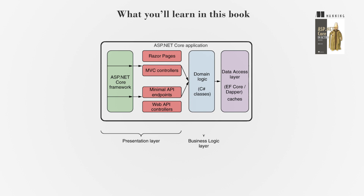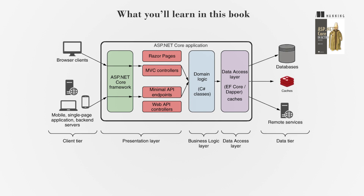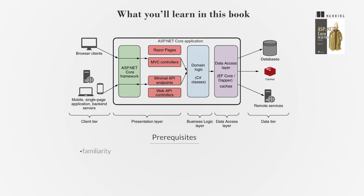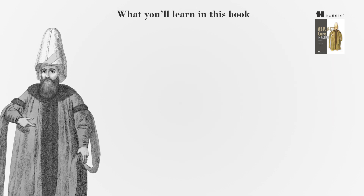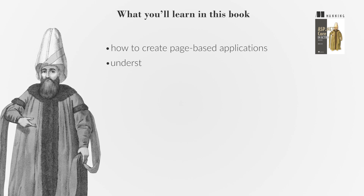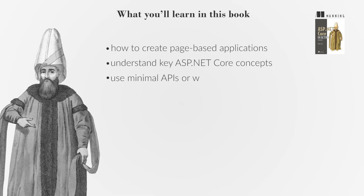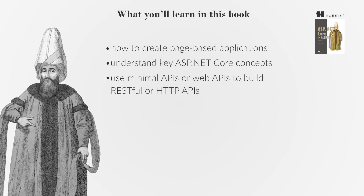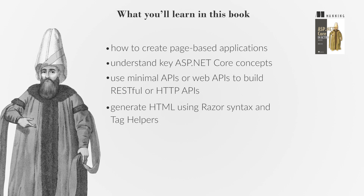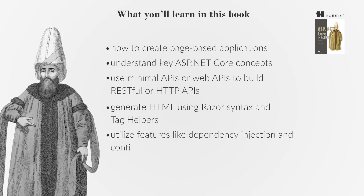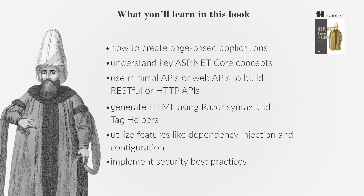This book provides an in-depth tour of the ASP.NET Core framework. It is recommended that you have familiarity with C# or a similar object-oriented language, as well as basic knowledge of web concepts like HTML and JavaScript. Throughout the book, you will learn how to create page-based applications, understand key ASP.NET Core concepts, use minimal APIs or web APIs to build RESTful or HTTP APIs, generate HTML using Razor syntax and tag helpers, utilize features like dependency injection and configuration, and implement security best practices.